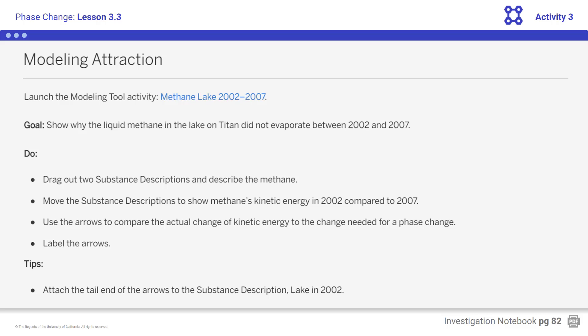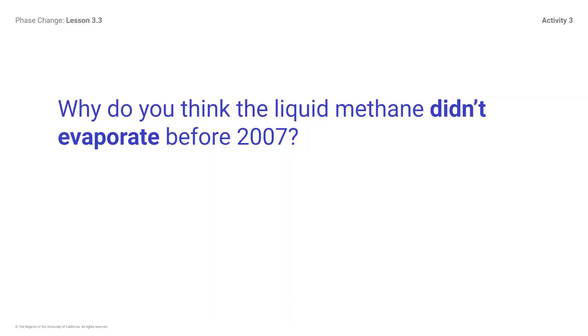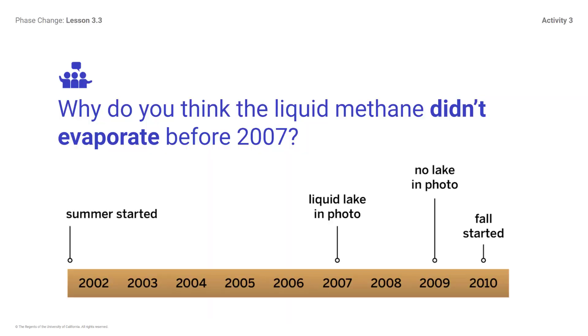We might say the actual change in kinetic energy arrow would be shorter than the change in kinetic energy needed for phase change arrow. Students, complete your models. Why do you think the liquid methane didn't evaporate before 2007? Consider how the interaction between attraction and kinetic energy affected the methane. End of activity. Thank you.